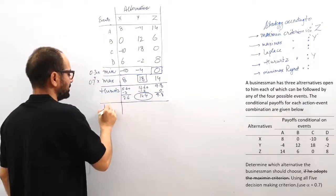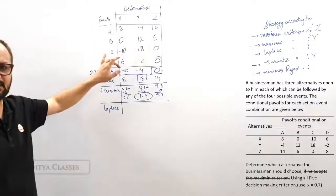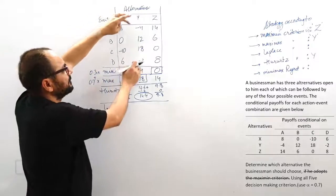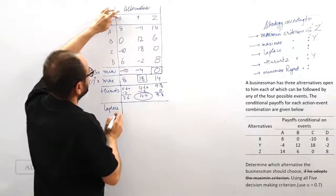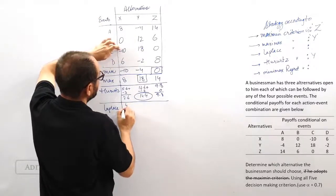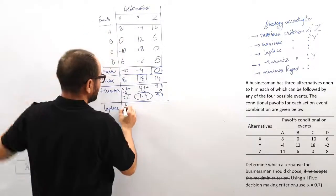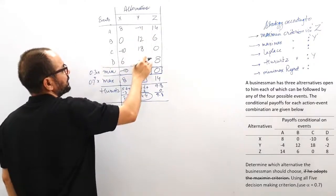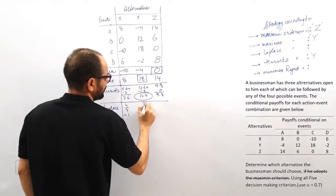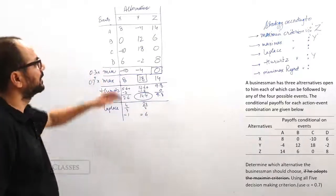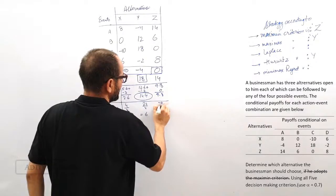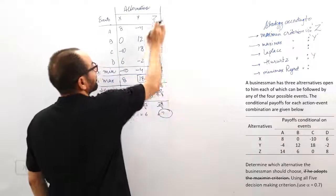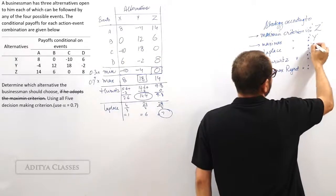Laplace's philosophy is to take the average of all returns. For x: 8 + 0 + minus 10 + 6 = 4, divided by 4 = 1. For y: minus 4 + 12 + 18 + minus 2 = 24, divided by 4 = 6. For z: 14 + 6 + 0 + 8 = 28, divided by 4 = 7. The best value according to Laplace is 7, from strategy z.